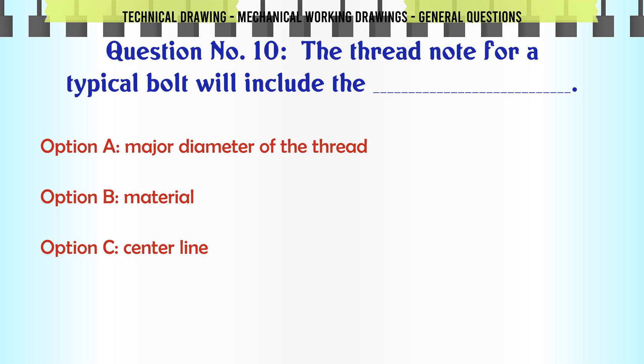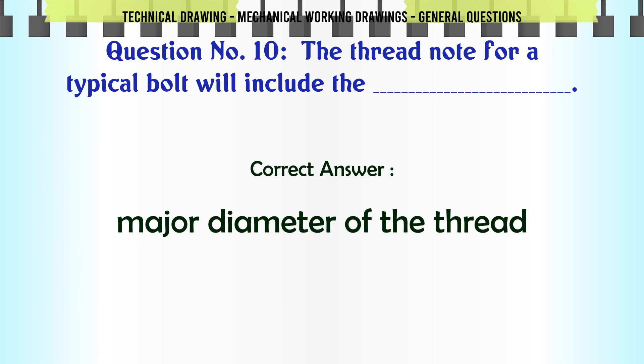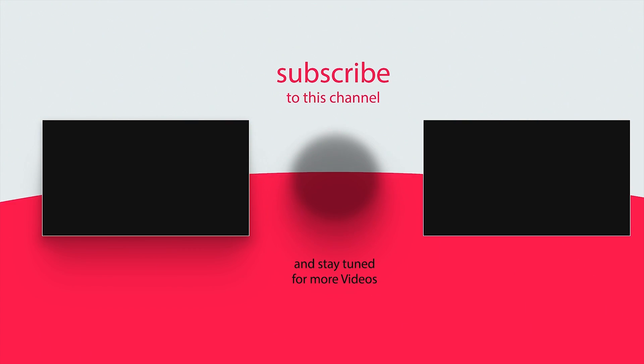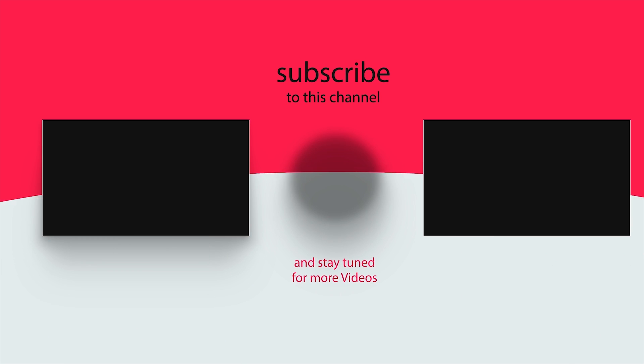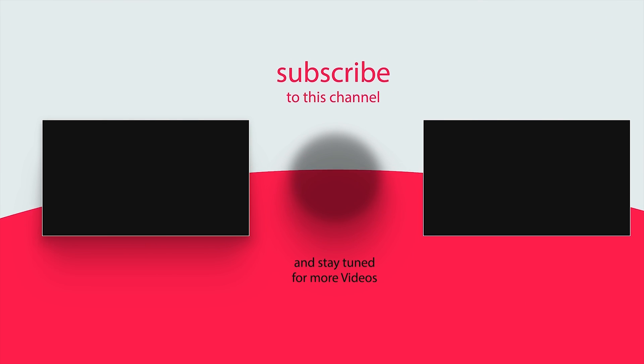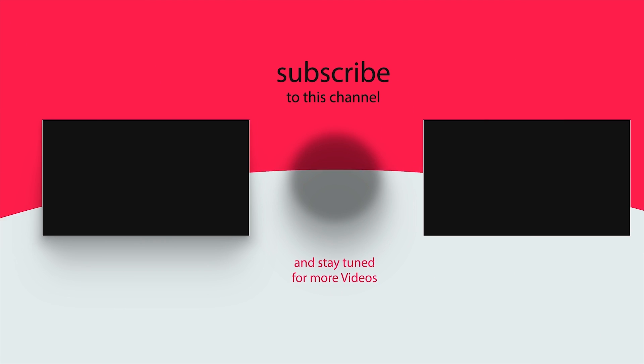The thread note for a typical bolt will include the: A. Major diameter of the thread, B. Material, C. Center line, D. Offset distance. The correct answer is Major diameter of the thread.